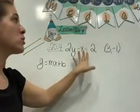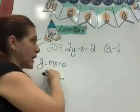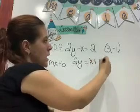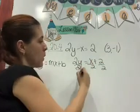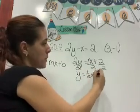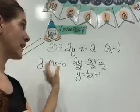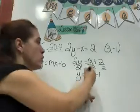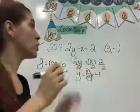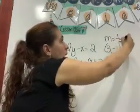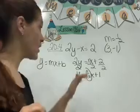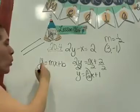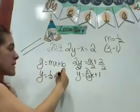So knowing that parallel lines always have the same slope, the very first thing you do is put this equation into the normal line equation with y by itself. You go 2y equals x plus 2, then divide everything by 2, so it's going to be y equals one half x plus 1. That's the equation of this line in standard form. All you're grabbing from here is the slope. You know the slope is the same, so the equation of your new line is going to have a slope of one half, and then you don't need this line anymore.